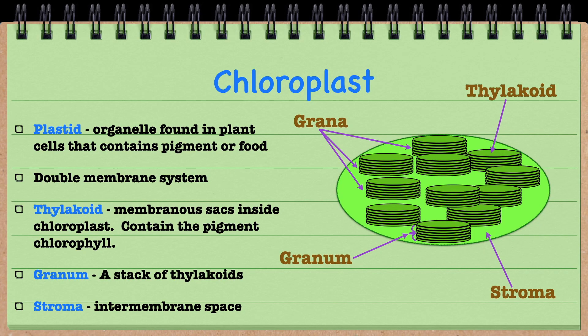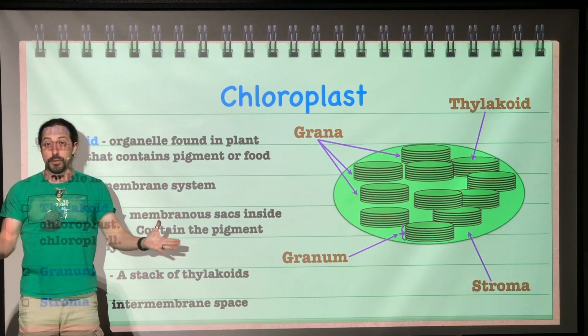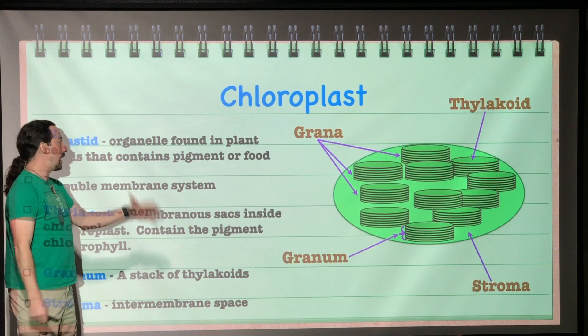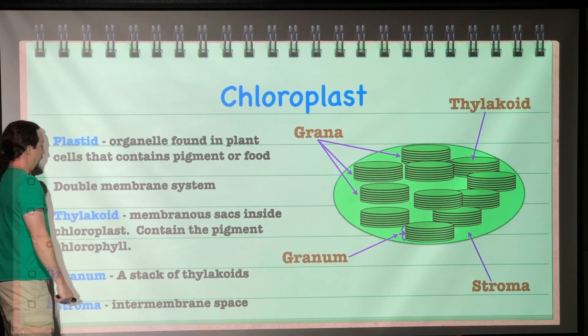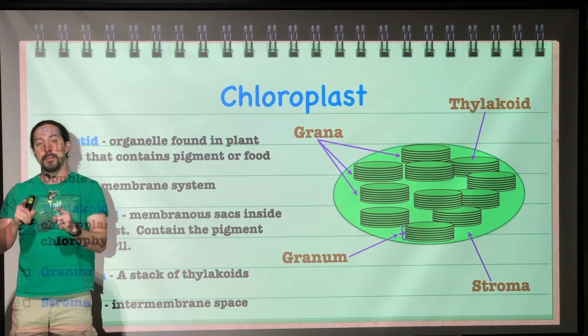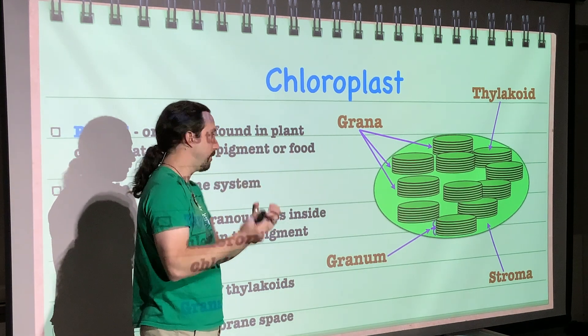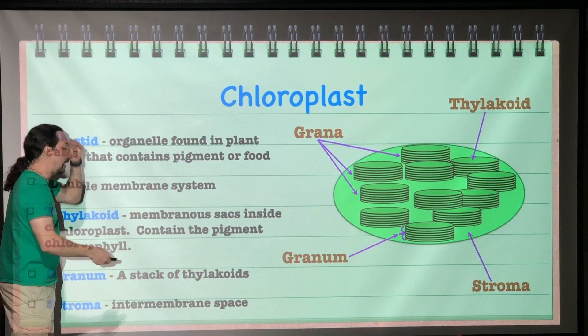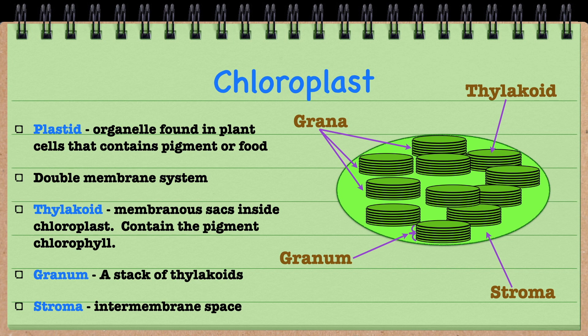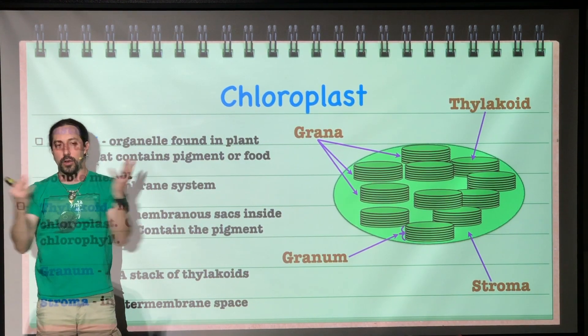The chloroplast is specifically a plastid, a type of organelle that's only found in plants that either contains a pigment or food. The most famous of all the plastids is the chloroplast. We call it that because it has chlorophyll in it. It has a double membrane. It has these membranous sacs that are stacked on top of each other called the thylakoids. And that's where the chlorophyll is. Chlorophyll is the pigment that allows chloroplasts to perform photosynthesis. It is the pigment that is going to capture that light energy originally. The stacks of our thylakoid are called granum, singularly, and plural would be grana. All the space that's in between all of our different grana is called the stroma.